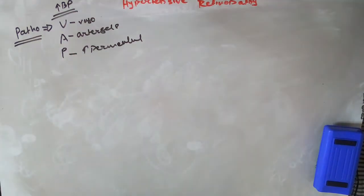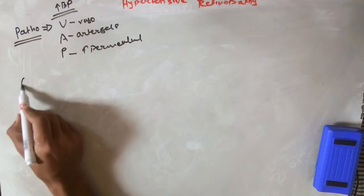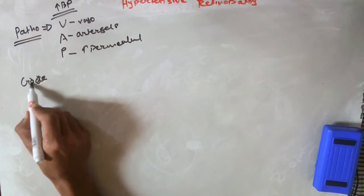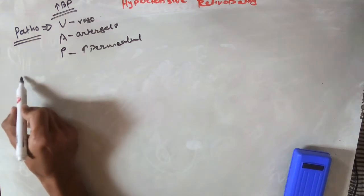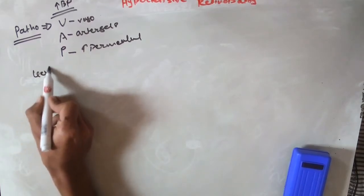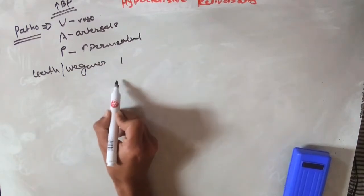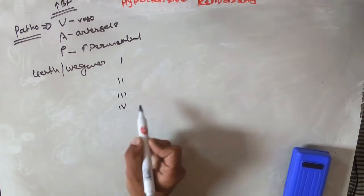The grading system used for hypertensive retinopathy is the Keith and Wagener classification. Keith and Wagener classified hypertension into four grades: grade one, two, three, and four.